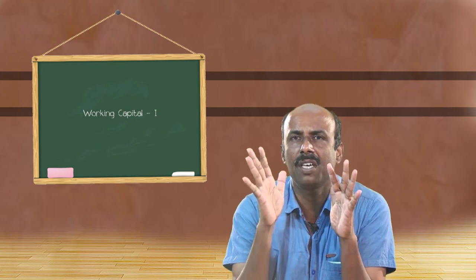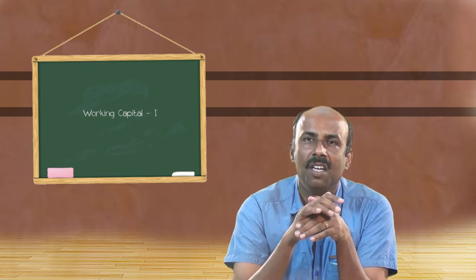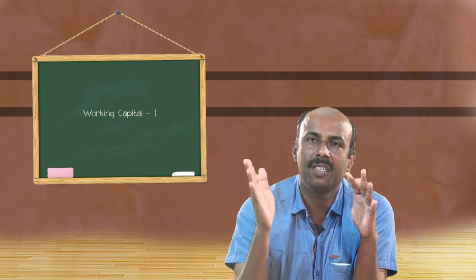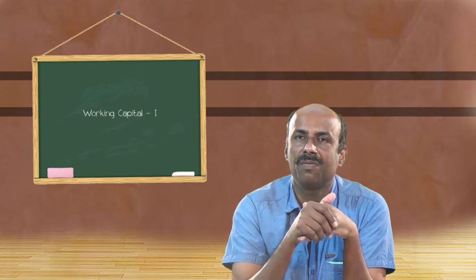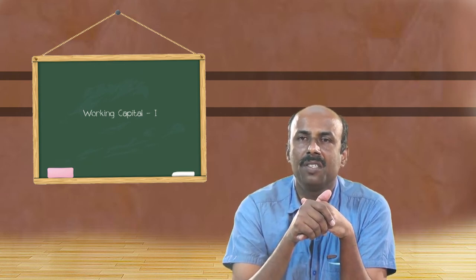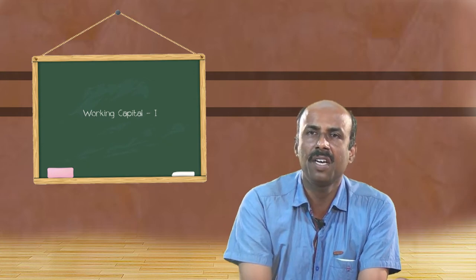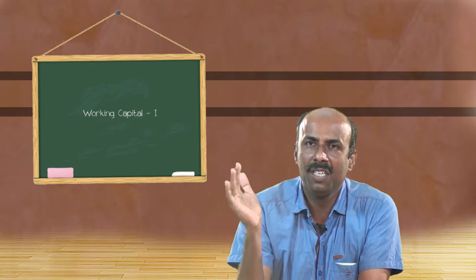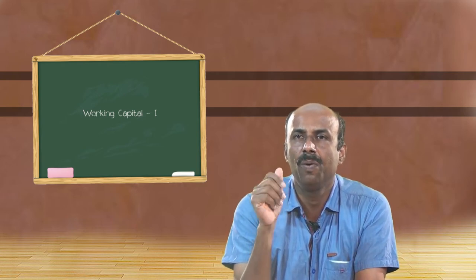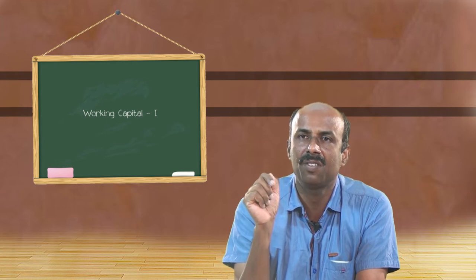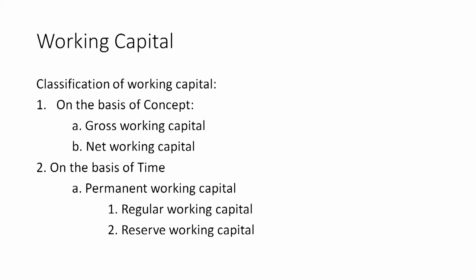To summarize the concepts of working capital: there are two broad categories — balance sheet concept and operating cycle concept. Under the balance sheet concept, it is classified into gross working capital and net working capital. On the basis of time, it is classified into permanent working capital and temporary or variable working capital. Under the operating cycle concept, it is also referred to as circulating or revolving capital.